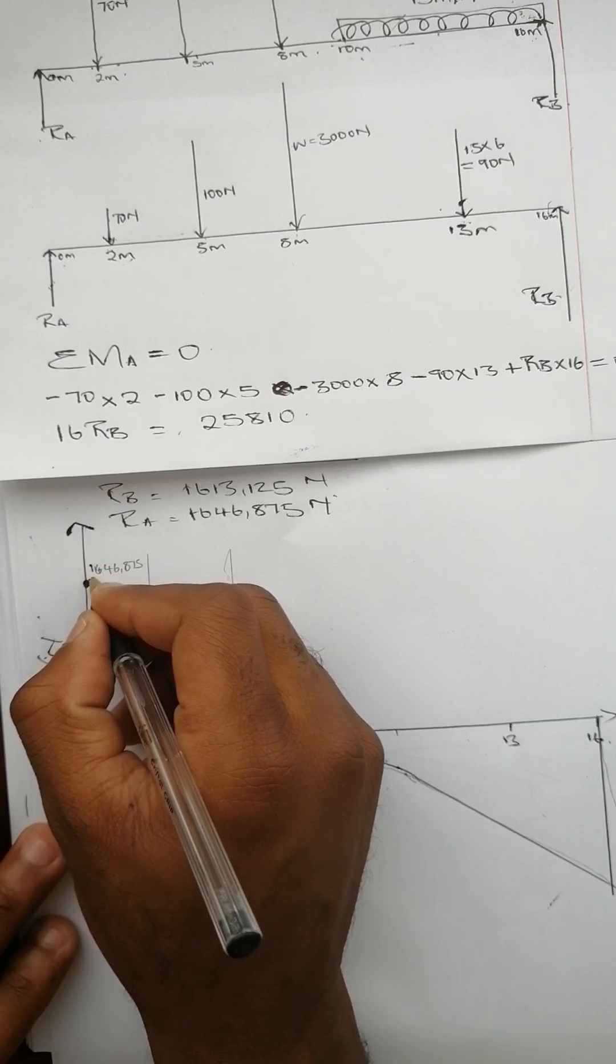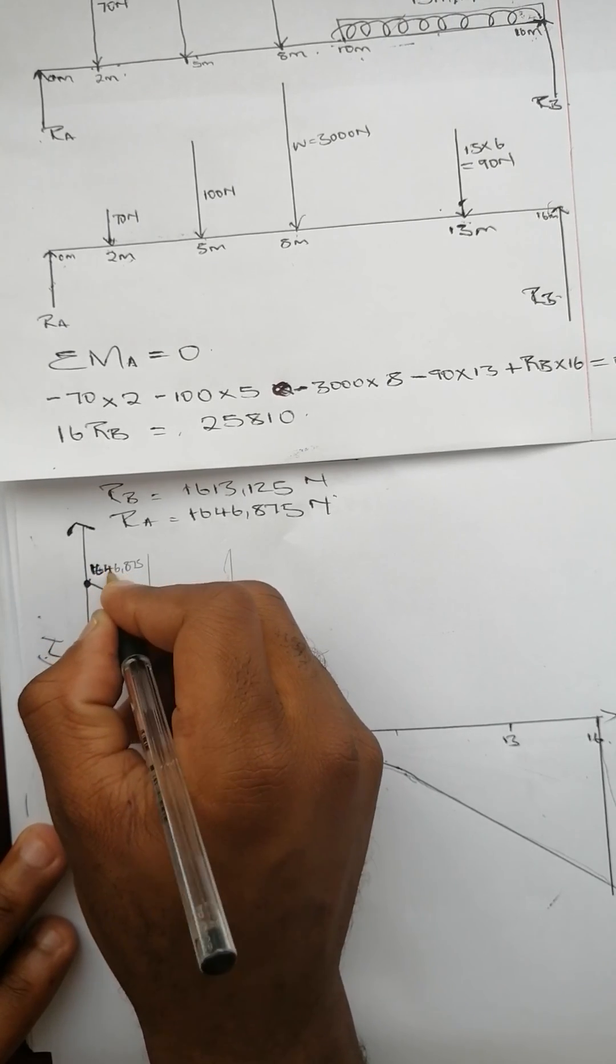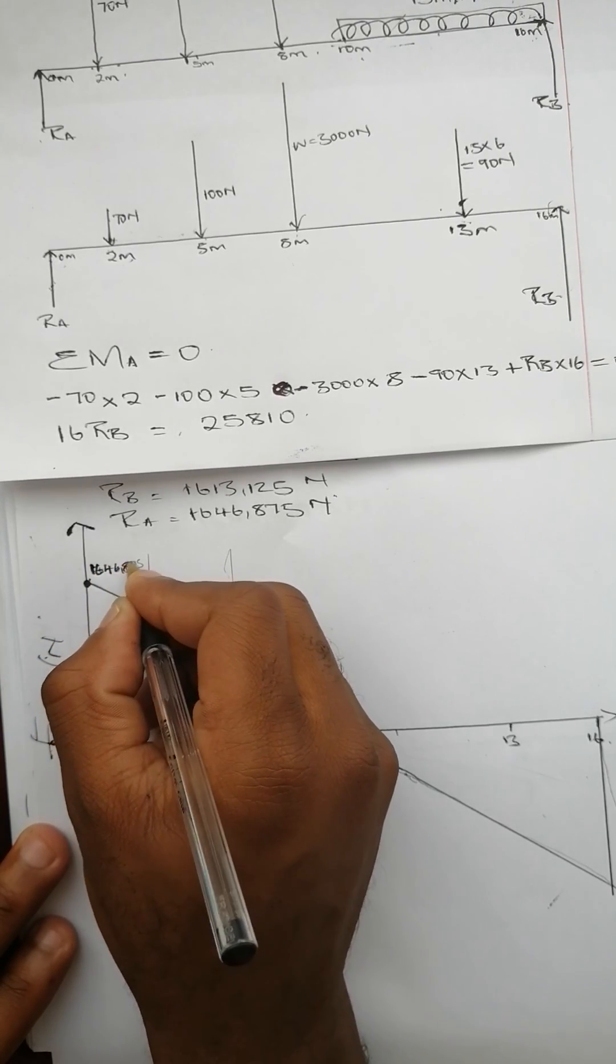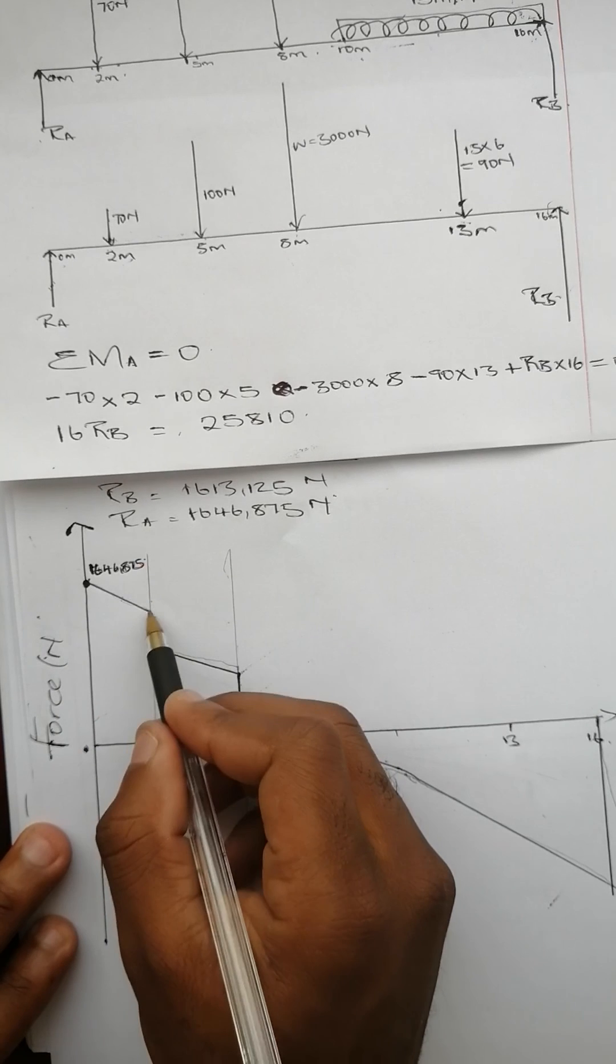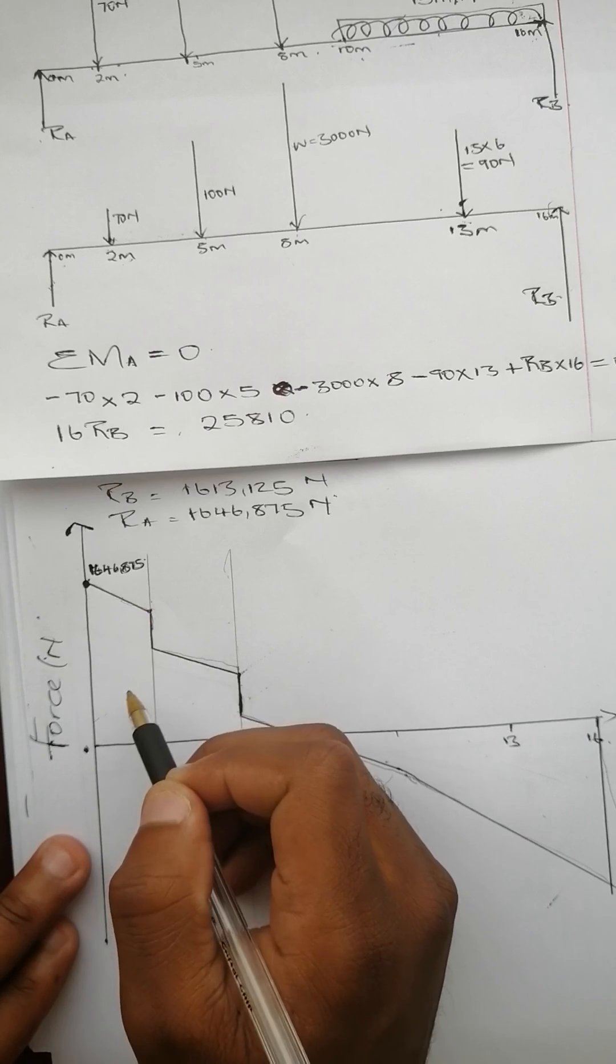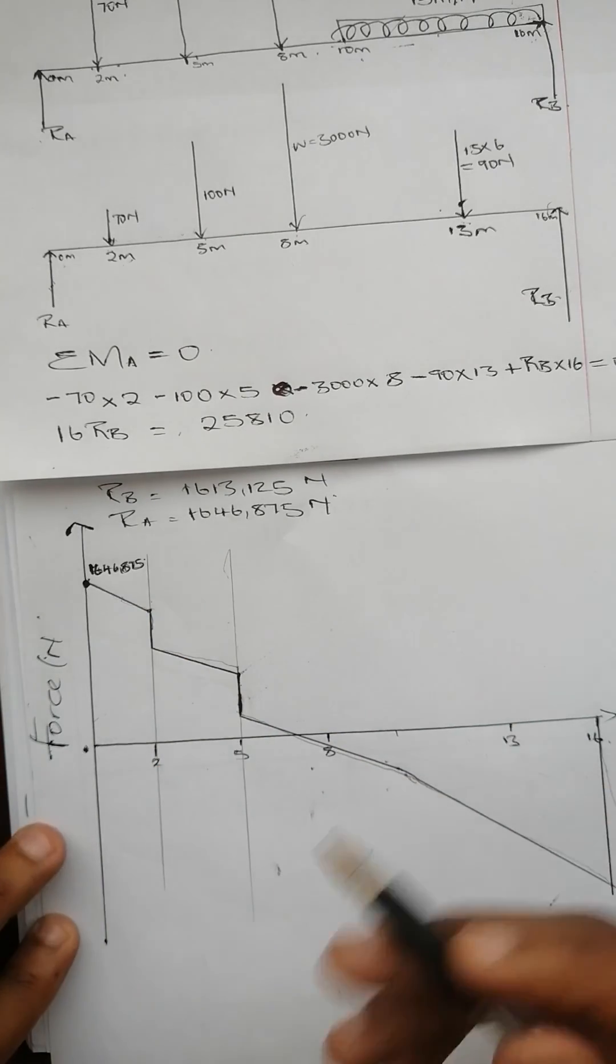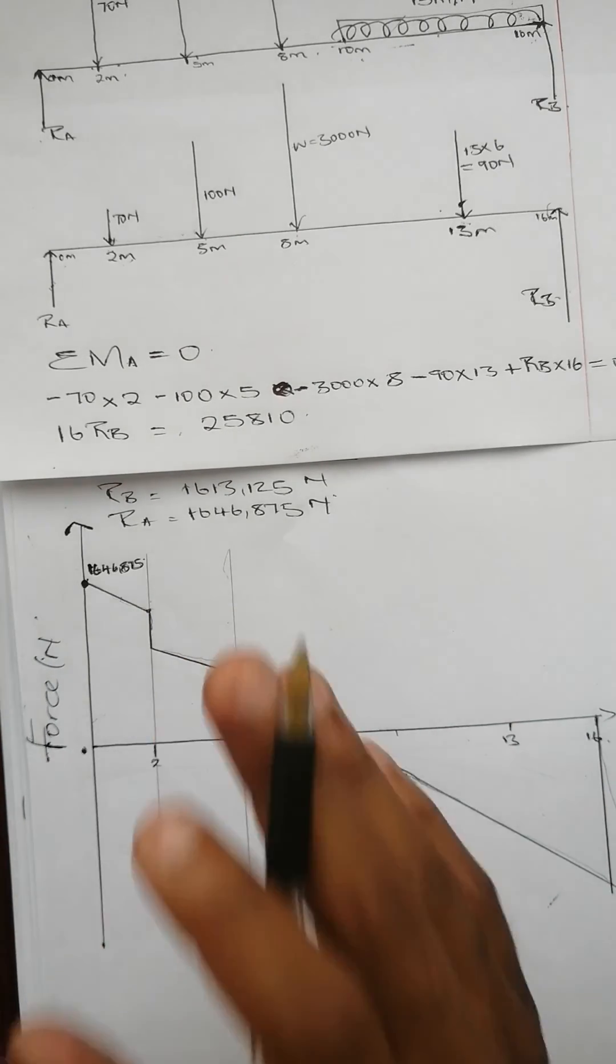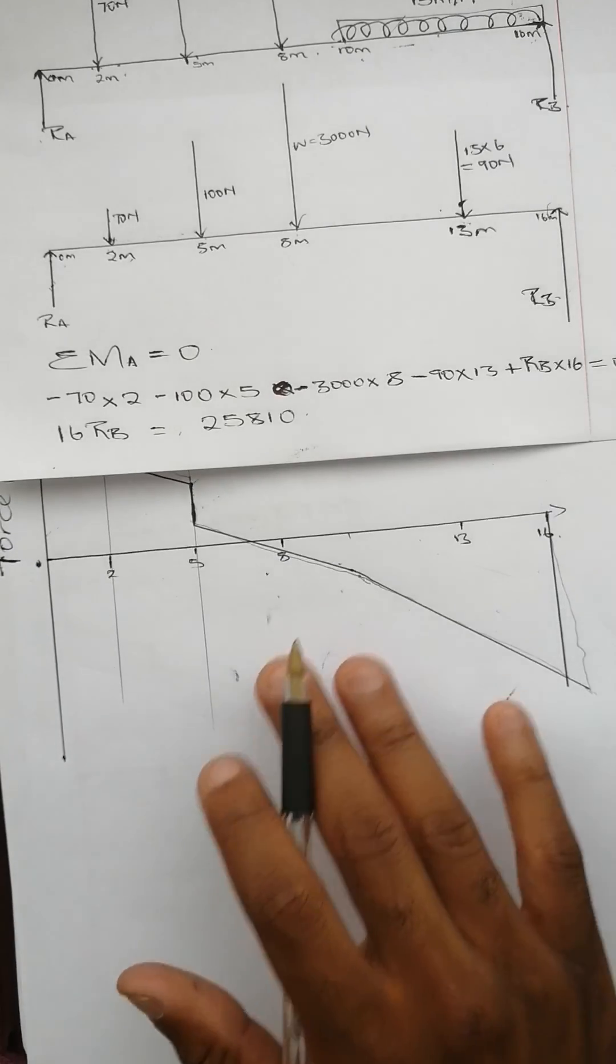Our starting point is 1646.875. We can't be sure of the exact values throughout the distributed load sections, but the diagram will look like this.